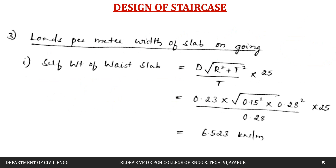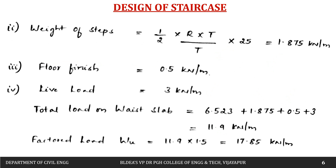Now let us calculate the load per meter width on the going. The self-weight of the waist slab uses the formula: D × √(R² + T²) / T × 25, where D is the overall thickness, R is riser, and T is tread. Substituting gives 6.523 kN/m. The weight of steps equals (1/2) × R × T / T × 25; substituting riser 150 mm and tread 280 mm gives 1.875 kN/m.